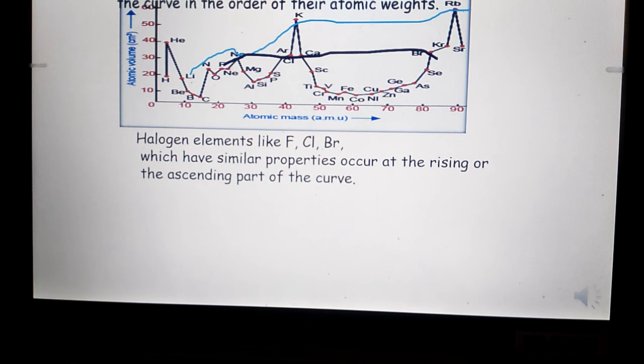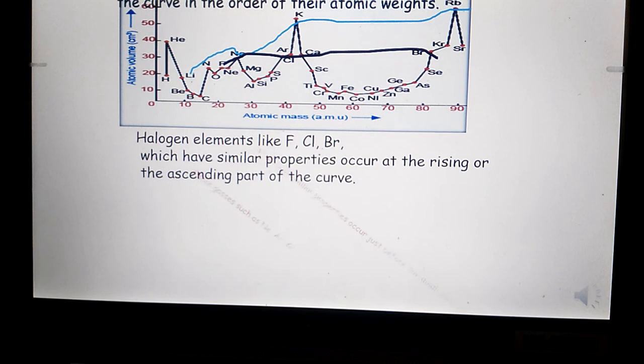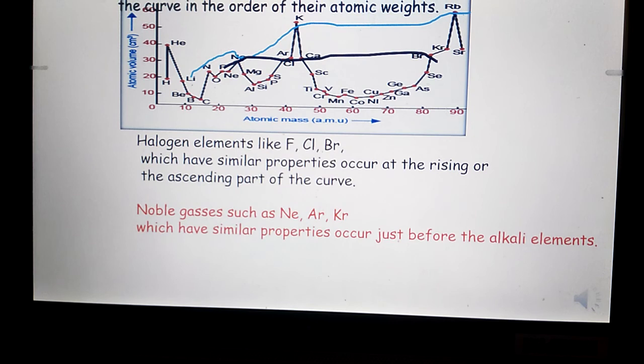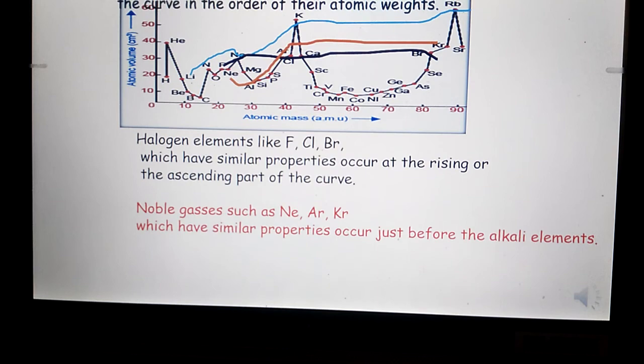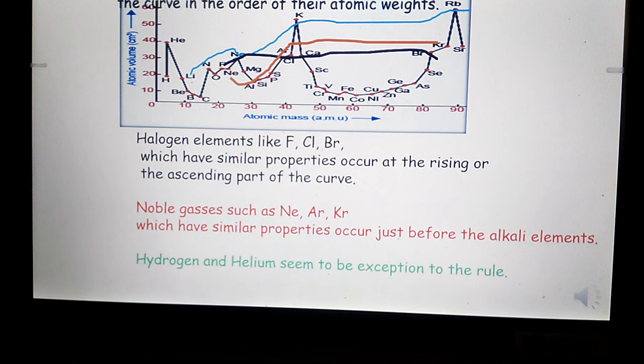Noble gases such as neon, argon, and krypton, which have similar properties, occur just before the alkali metals. The brown line indicates the noble gases. Hydrogen and helium seem to be exceptions. He was contemporary of Dmitri Mendeleev.